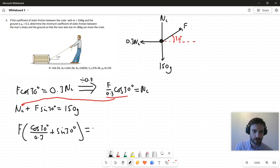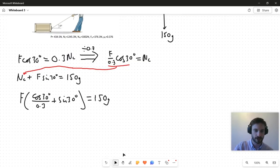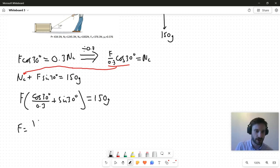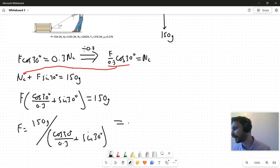This equals 150g. I can therefore say that F is equal to 150g over this bracket here, so cos 30 over 0.3 plus sin 30. And when I put that into my calculator, I get 434 newtons.